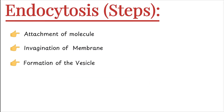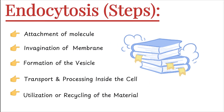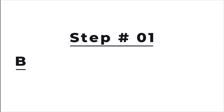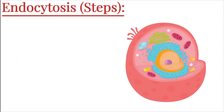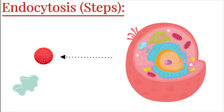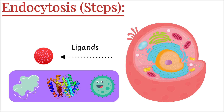Endocytosis happens in five key steps. Let's discuss them in detail. The first step is binding of the molecule to the plasma membrane. Imagine this is a cell getting ready to take in a large particle — it could be a food particle, a protein, or even a bacterium. We call such particles ligands. These are the substances the cell wants to take in.